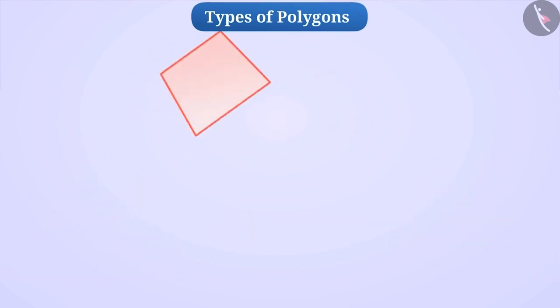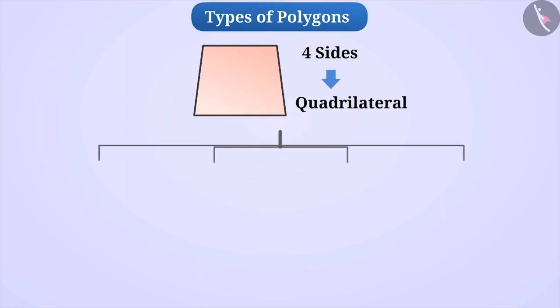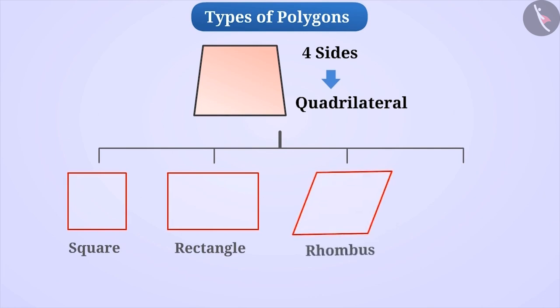If a polygon has four sides, then it is called a quadrilateral. There are different types of quadrilateral such as square, rectangle, rhombus, trapezium, etc. We have read about them in the previous videos.